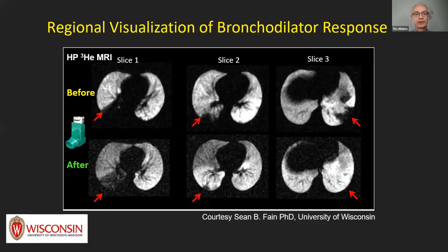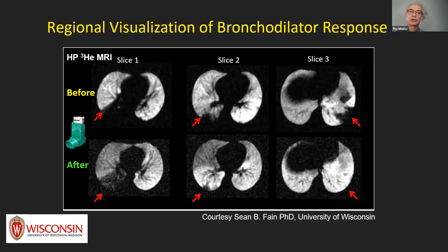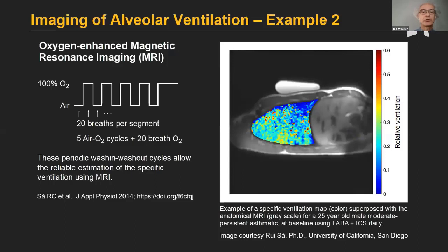If the subject then inhales a bronchodilator and the single inhalation of a tracer is repeated, we see that some airways reopen and are fully ventilated while other areas are partially ventilated or remain somewhat constrained. We can very well assess the strong response in ventilation heterogeneity that the tracer visualizes. Another excellent method is oxygen-enhanced magnetic resonance imaging, utilizing repeated periodic switching between air and 100% oxygen to obtain a strong signal of oxygen wash-in and wash-out that can be used to estimate specific ventilation using MRI.